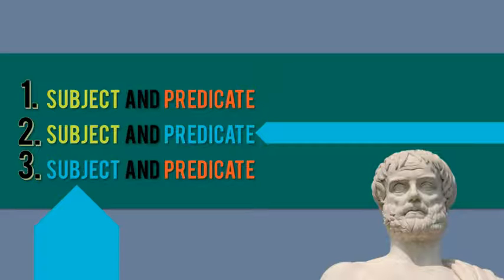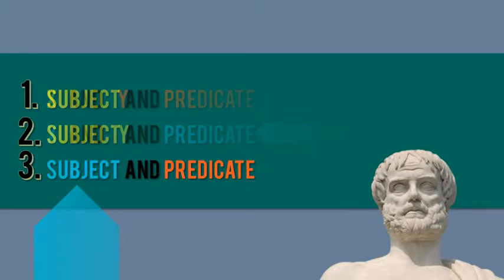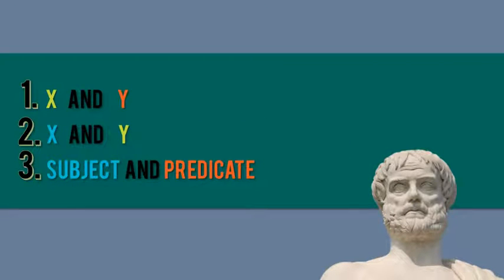So, let's switch the subject and predicate to the variables x and y so we can tease this out. Alright, so the last part of the conclusion, the predicate, will always be in the first statement, the major premise. But it may not be the last part of the sentence. It could be in either place. Similarly, the first part of the conclusion will be in the second statement, or the minor premise.